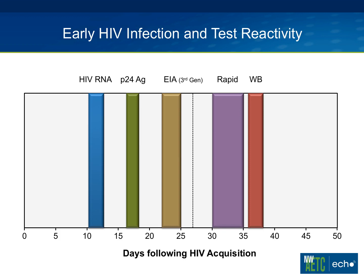More specifically, looking at the time frame after HIV acquisition: the viral load typically trips positive at about day 10 or 11; the antigen test around day 16 or 17; a standard third-generation EIA assay somewhere around day 23 to 24; the prior rapid tests didn't trip until about day 30; and the Western blot typically after a month, often day 36 or 37, before becoming clearly positive. These antigen assays are a significant advantage in terms of the detection time frame for people with early HIV.